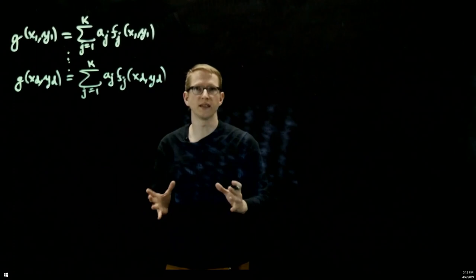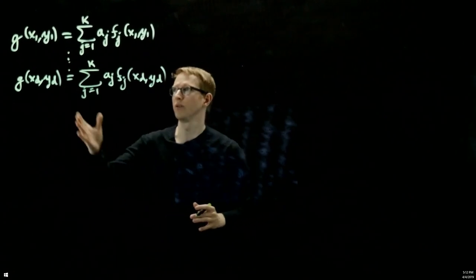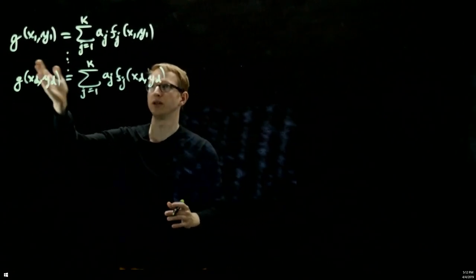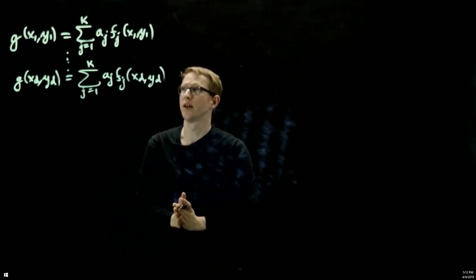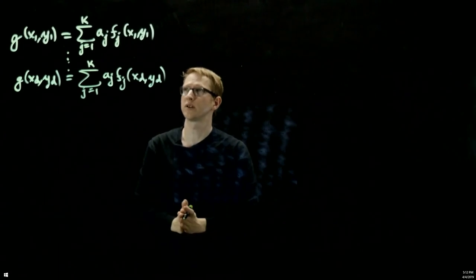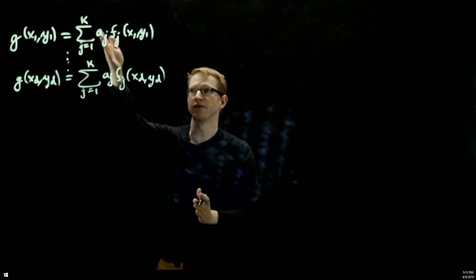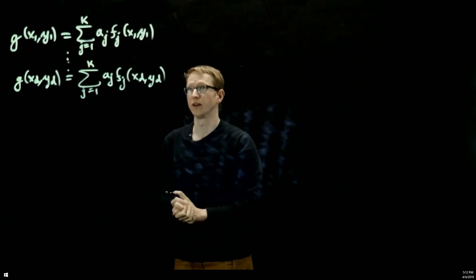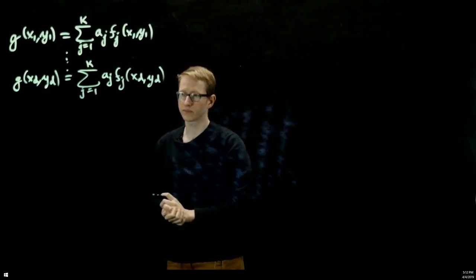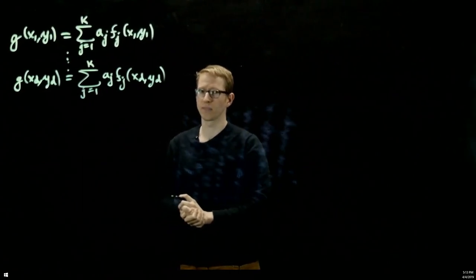So in this case we can write down the same exact setup as we had before. We would just have this as our vector b. You can see the functions with their data points make a matrix, in this case a d by k matrix, and then that acts on the vector of a's, a1 through ak, because we have k unknowns.